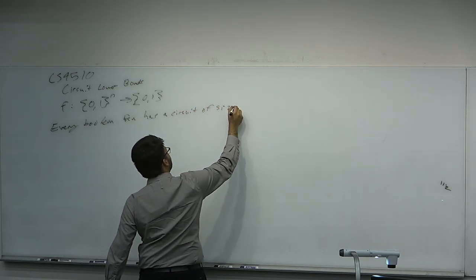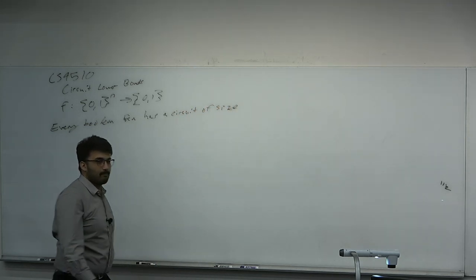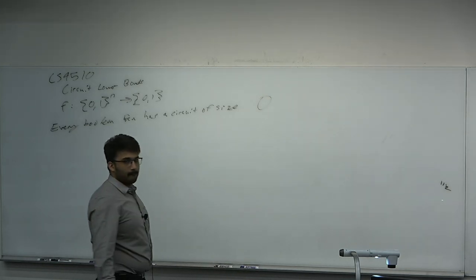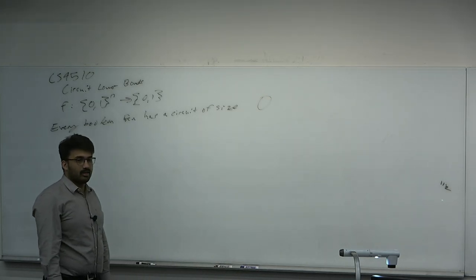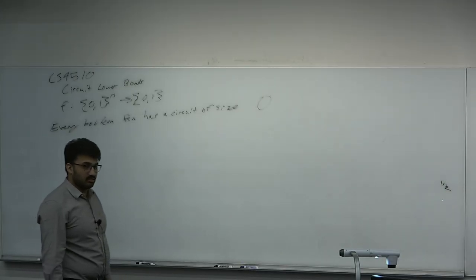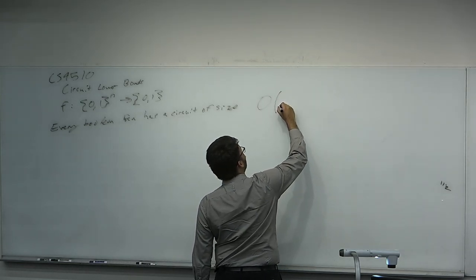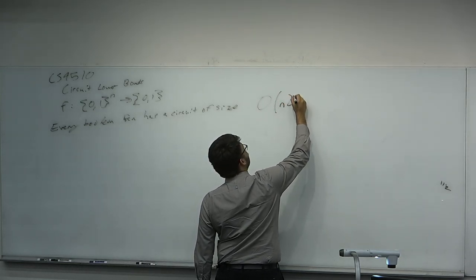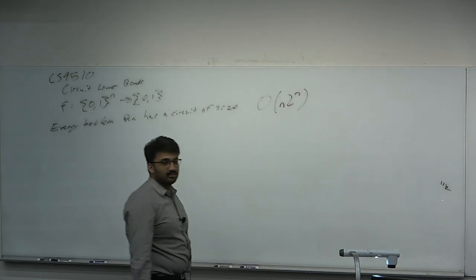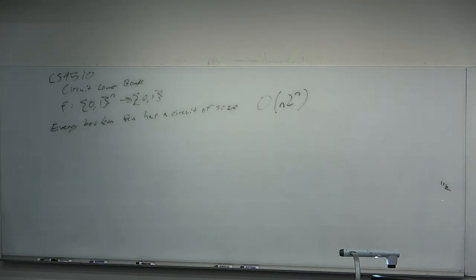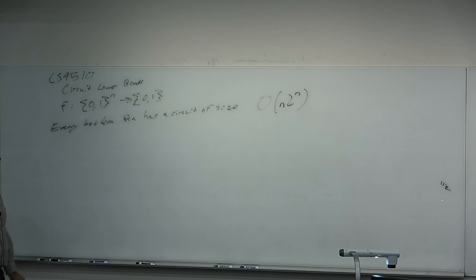Every Boolean function has a circuit of size — what do we think the size is? Estimate for me. 2 to the n? In fact, the one we'll prove is worse. We'll prove n times 2 to the n. After we do this proof, we'll talk about the optimality — can you do better than this?